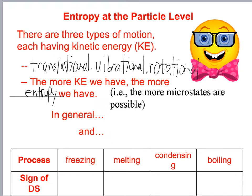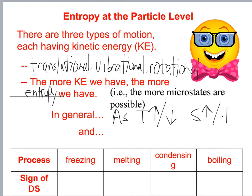The more microstates that are possible, the more entropy. In general, as temperature increases or decreases, S will increase or decrease correspondingly.